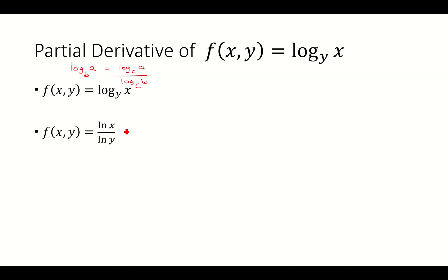So think of this as just 1 over natural log y times natural log x. So we're having the constant outside, and then we'll just take the derivative of natural log x, which is just 1 over x. And then you just multiply these two to get 1 over x times natural log y.